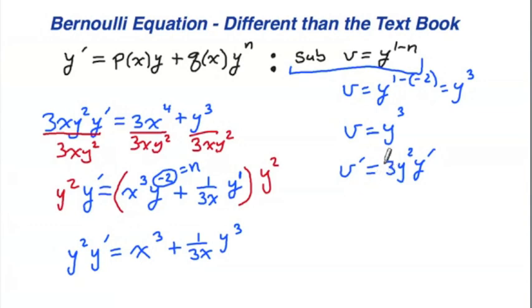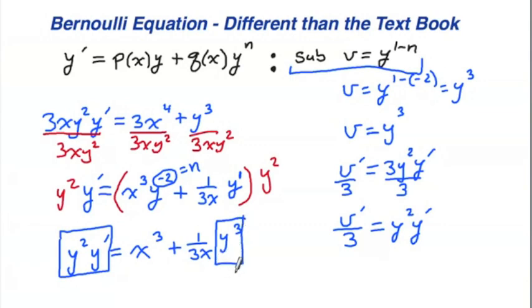Next to it is y squared, which is good because that's what v prime has in it. The only thing that's missing is this 3. So one way to deal with it is to take this equation and divide both sides by 3. So I can do a substitution where v prime over 3 replaces y squared times y prime. So this y squared y prime, we're going to change it into v prime over 3. And this y cubed, we're going to change it into just plain old v.